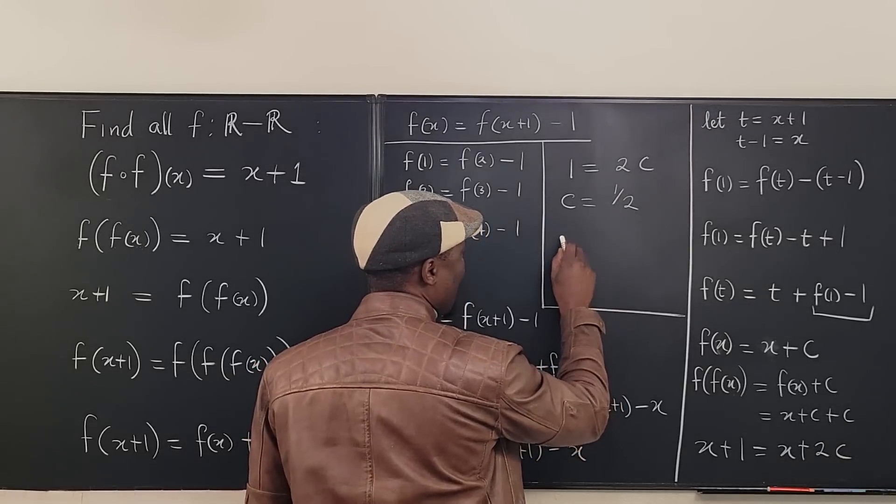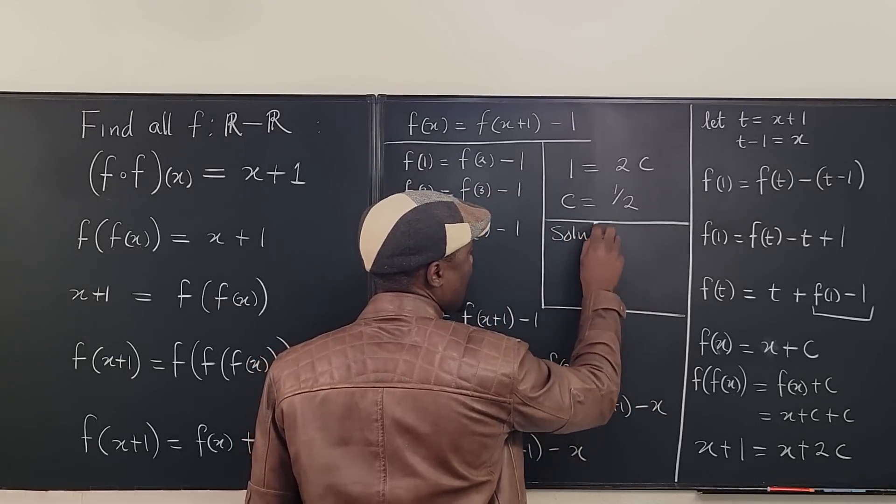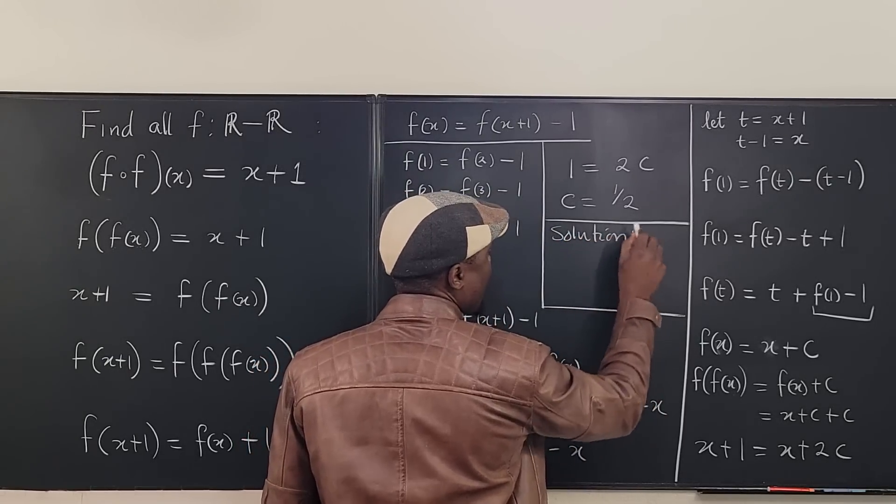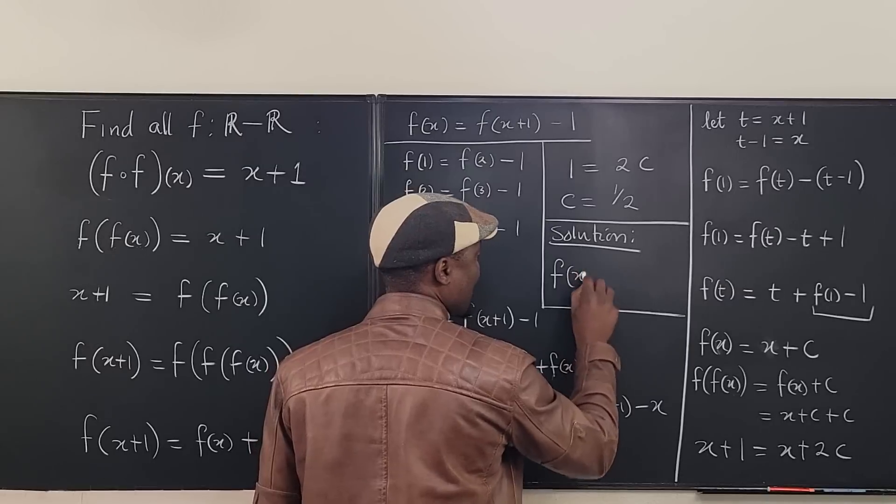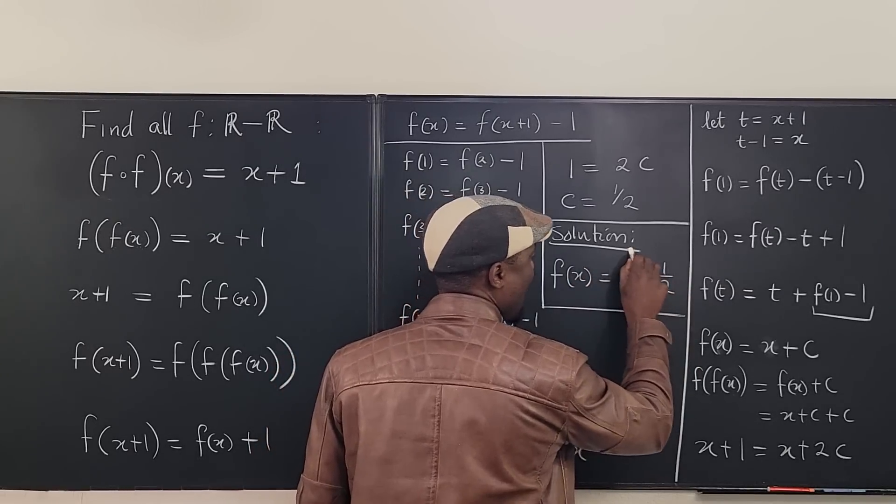So our answer, f of x equals x plus one half.